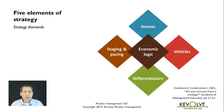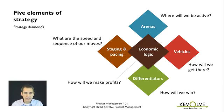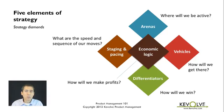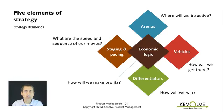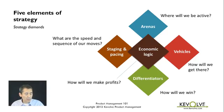The five elements of strategy: we start with arenas — where are you playing, where are you being active? Vehicles — how will you get there, how will you get to your objectives? Differentiators — what's going to allow you to win, what makes you better than your competitors? Economic logic — how will you make money? And staging and pacing — what is the timing, speed, and sequence of the market moves you're going to make? That's the five elements of the strategy.